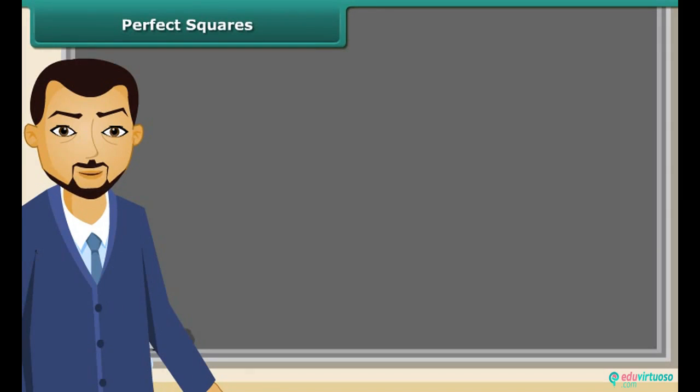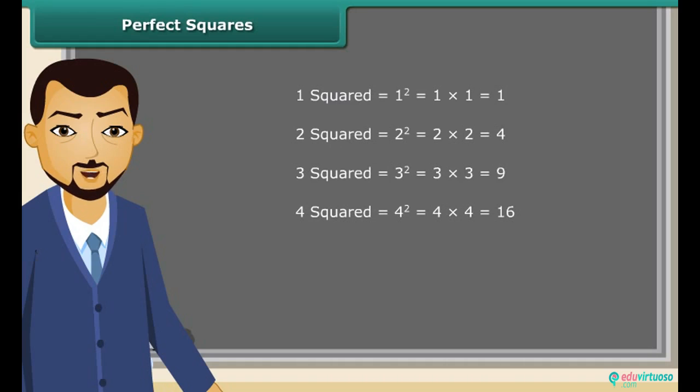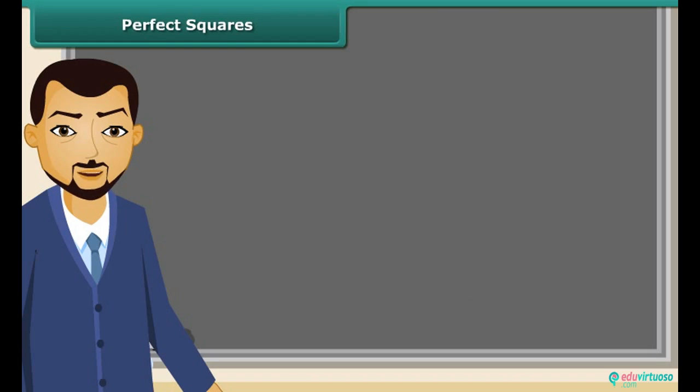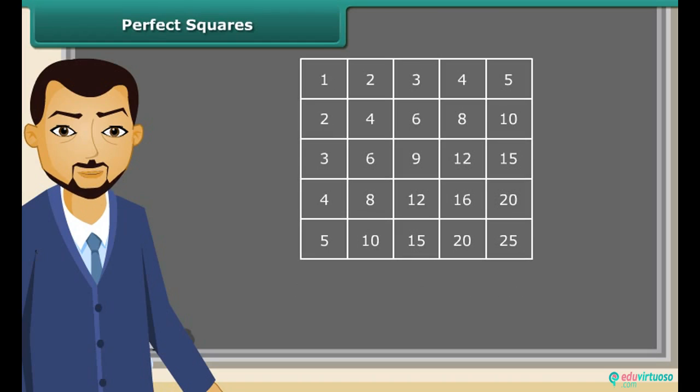Let us read: 1 square is 1, 2 square is 4, 3 square is 9, 4 square is 16, 5 square is 25, and so on. We can also find squares on the multiplication table. These numbers are called perfect squares, which are the squares of the whole numbers.